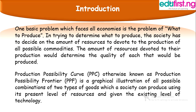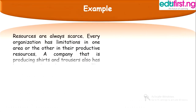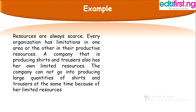Production possibility curve, otherwise known as production possibility frontier, is a graphical illustration of all possible combinations of two types of goods which a society can produce using its present level of resources and given the existing level of technology. Let us look at an example that would help drive home our point.